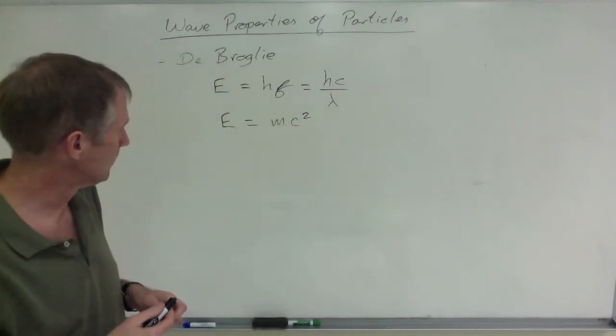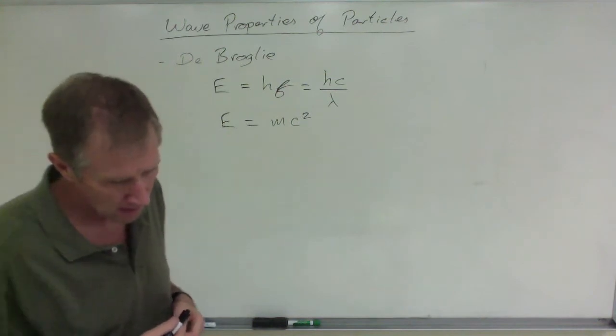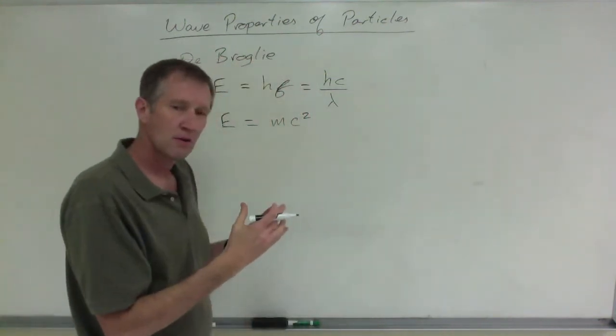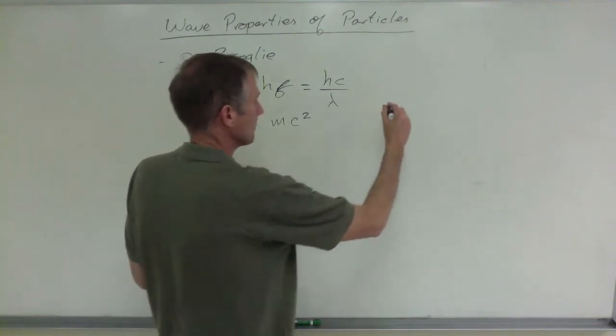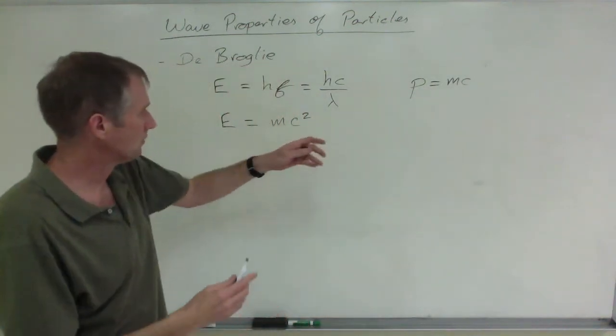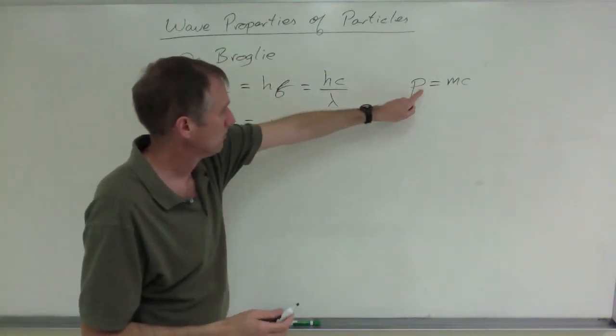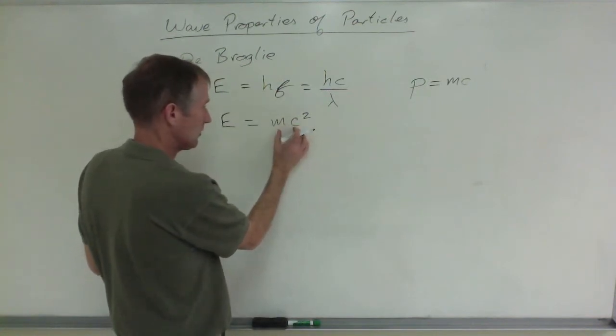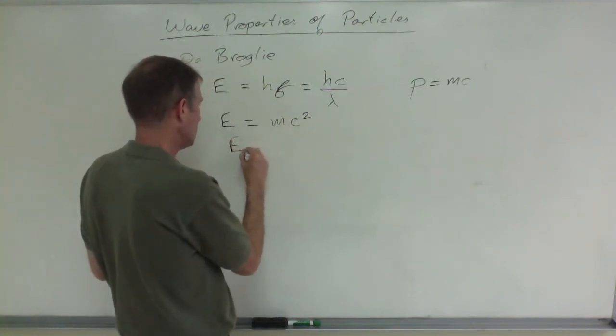One more thing: you know that at least for a photon the momentum would equal mass times velocity, which would be m times c. I'm going to do some substitutions here. P is equal to m times c, so the energy is equal to P times c.